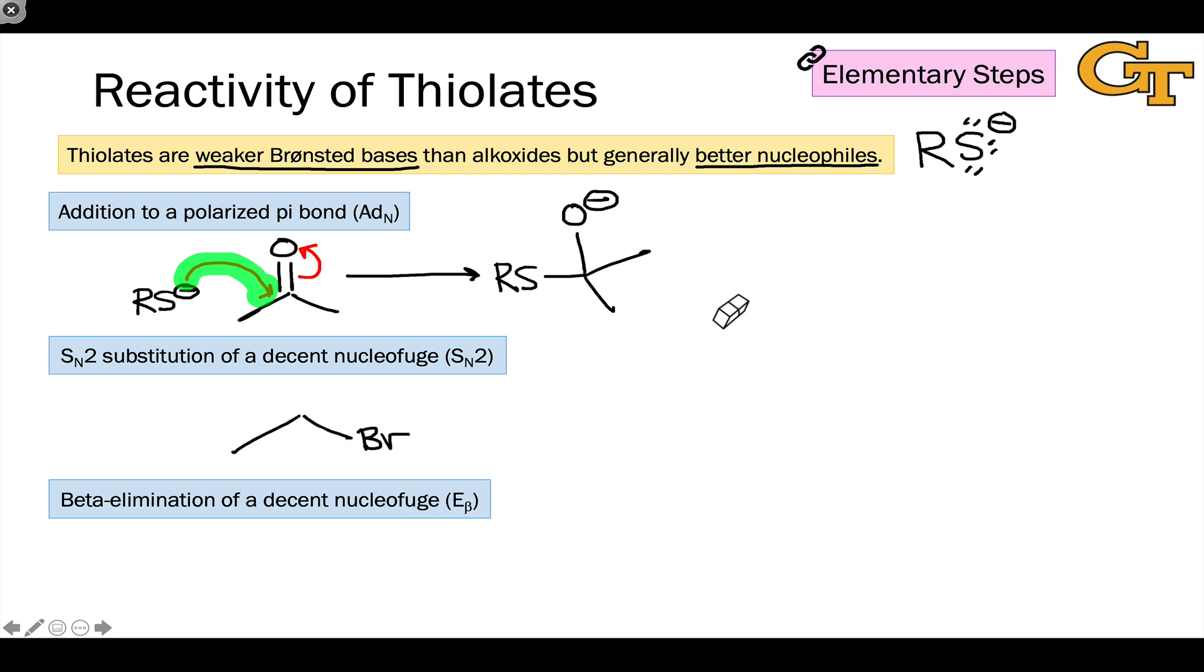We also see the anionic sulfur of a thiolate acting as a nucleophile towards sigma-star acceptors, for example, in SN2 elementary steps.